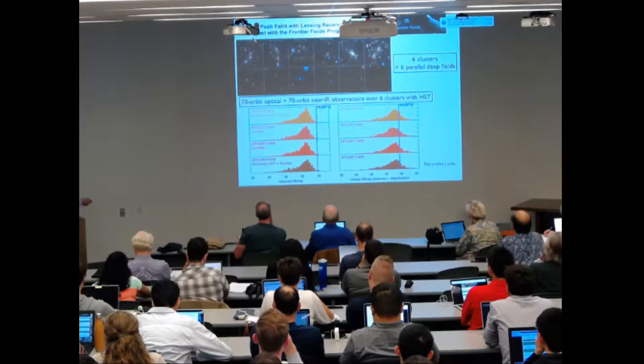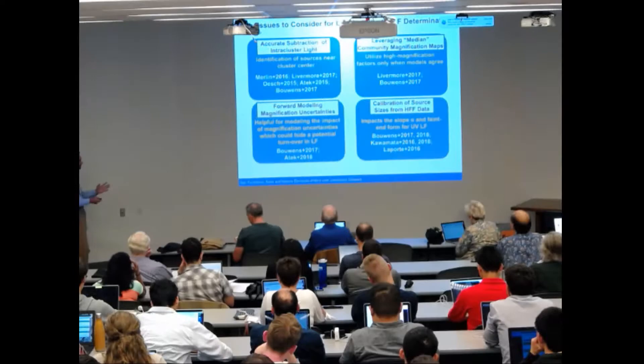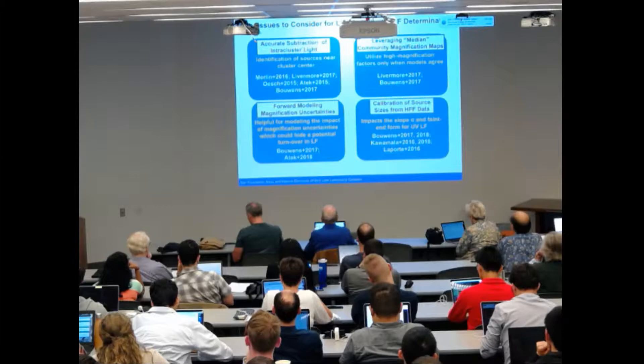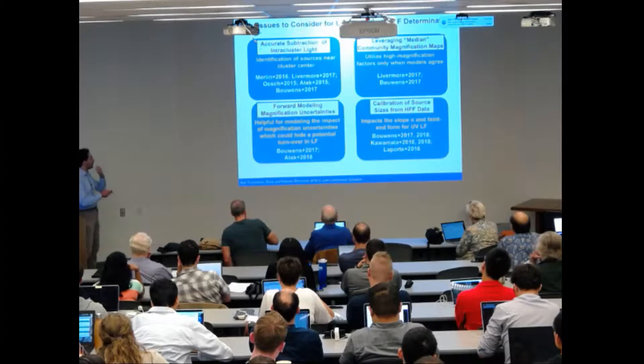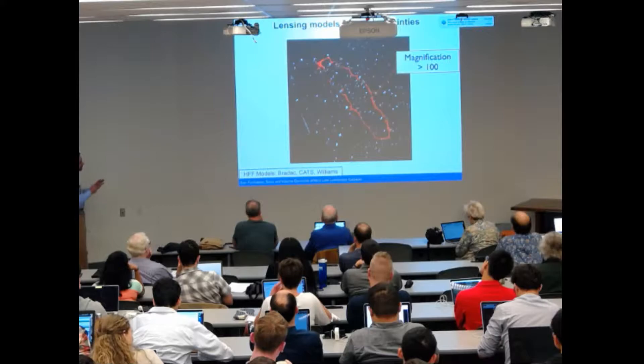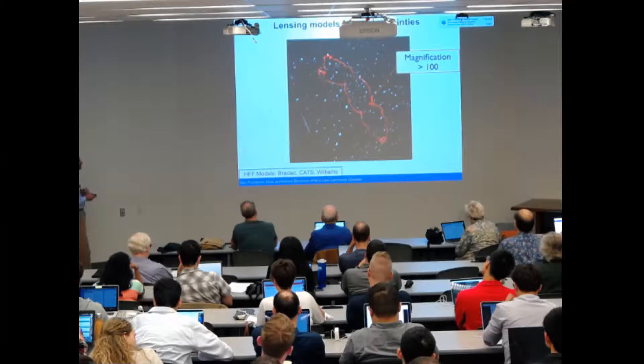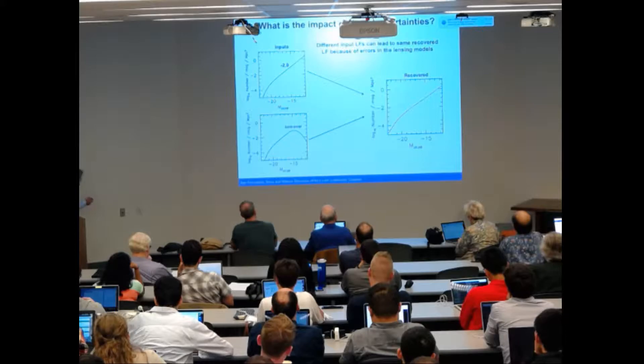So what people are trying to do now is to use the magnification power from the Hubble Frontier Field program so that we can get deeper by about one to two magnitudes and construct luminosity functions based on this data. But when we deal with clusters, we have to take into account many more parameters than field luminosity function. Here I will point out two of them. One is that the magnification factor in the highest magnification regions differ quite dramatically from one model to each other.